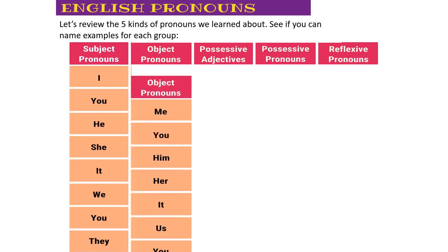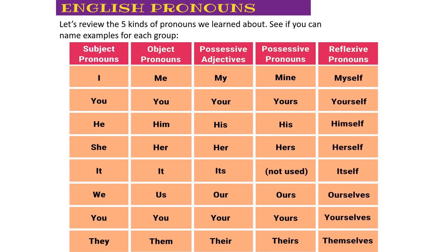If you need a cheat sheet, you can study this list when doing activities - take a screenshot and use it. Looking at the first row: 'I', 'me', 'my', 'mine', 'myself' - 'I' will always be a subject pronoun, 'me' will always be an object pronoun, 'my' will always be a possessive adjective, 'mine' will be a possessive pronoun, and 'myself' will always be a reflexive pronoun. Be careful though - in the second row 'you' and 'you' are the same, in the third row 'his' and 'his' are the same, so this list isn't foolproof. Try to practice the rules.